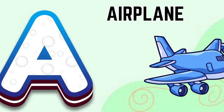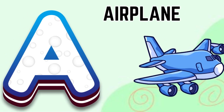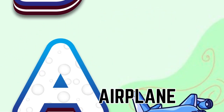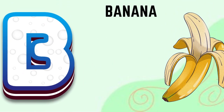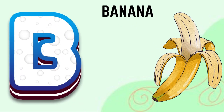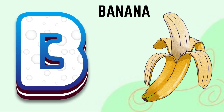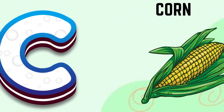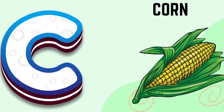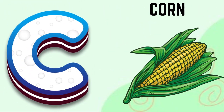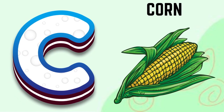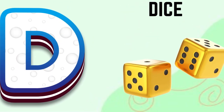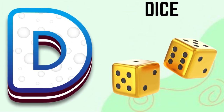A is for airplane, B for banana, C for corn, D for dice.